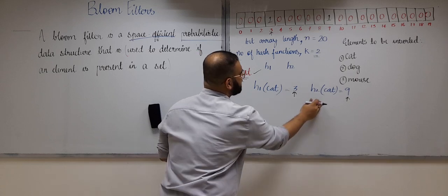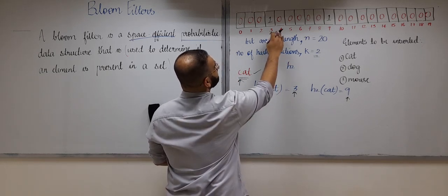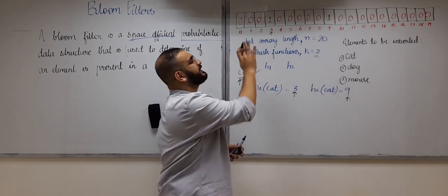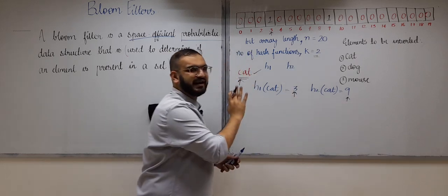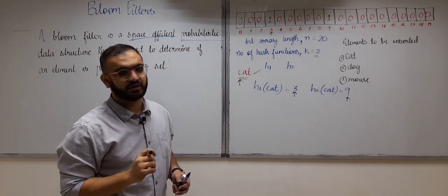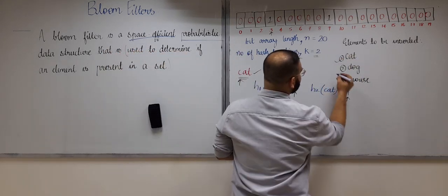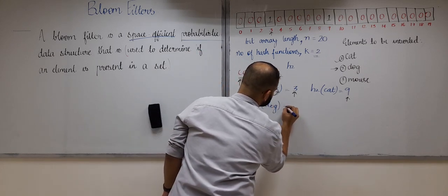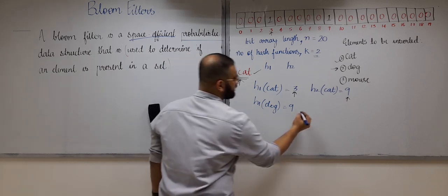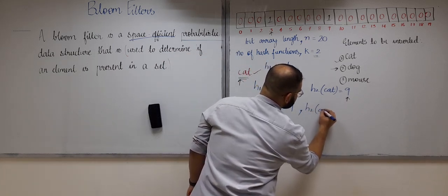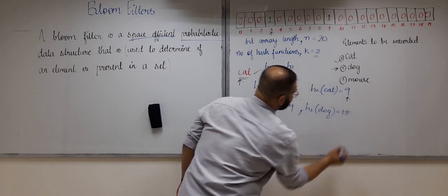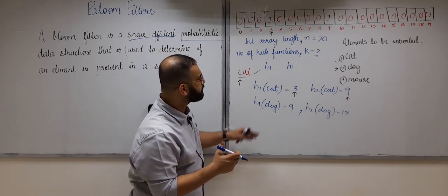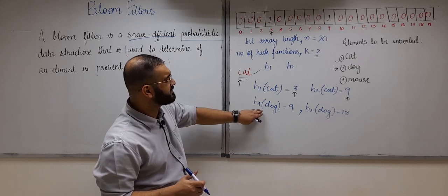Insert is as simple as that — find the hash values of the element to be inserted. We found hash values 3 and 9 because there were two hash functions h1 and h2. At those indexes we change the bit from 0 to 1. If the bit was already 1, it remains 1 — we just ensure the bit at that index is 1.